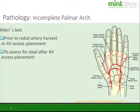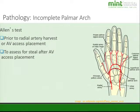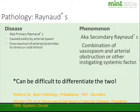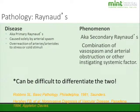Another test we perform is the Allen's test, usually to assess for an incomplete palmar arch. This can be done prior to radial artery harvest or AV access placement, or to check for steal if the patient already has AV access. Raynaud's is also commonly tested, and one of the difficult things is differentiating between Raynaud's disease and Raynaud's phenomenon. Raynaud's disease, also known as primary Raynaud's, is caused solely by arterial spasm.